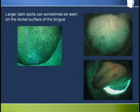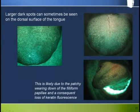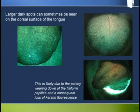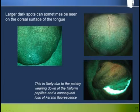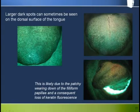Larger dark spots can sometimes be seen on the dorsal surface of the tongue. This is likely due to patchy wearing down of the filiform papilla from use of the tongue as it comes into contact with food and/or teeth. The result is a dark patch due to the loss of keratin fluorescence from the filiform papilla.